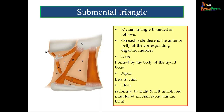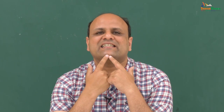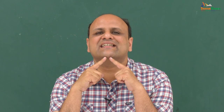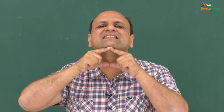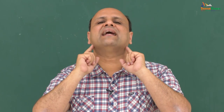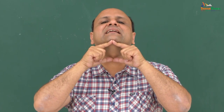The digastric triangle is marked by 2 in the figure. The median triangle is called the submental triangle, marked by 1 in the figure. Looking at the chin with two index fingers joined and thumbs below, this region represents the submental triangle. A person has two digastric triangles — one on the right and one on the left — but only one submental triangle, which is a median triangle.